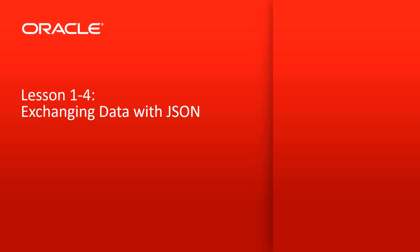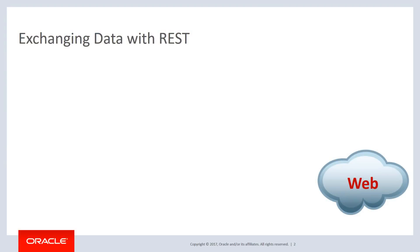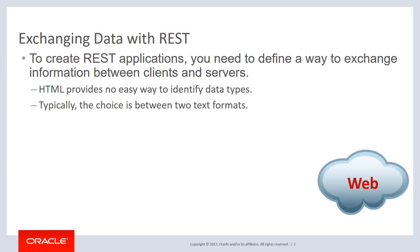In this lesson we talk about exchanging data with JSON. When we use REST to create REST applications, we need to have a way to exchange data and information between the clients and the servers. We can't use HTML because it doesn't have any real data types, so typically we choose between two formats.